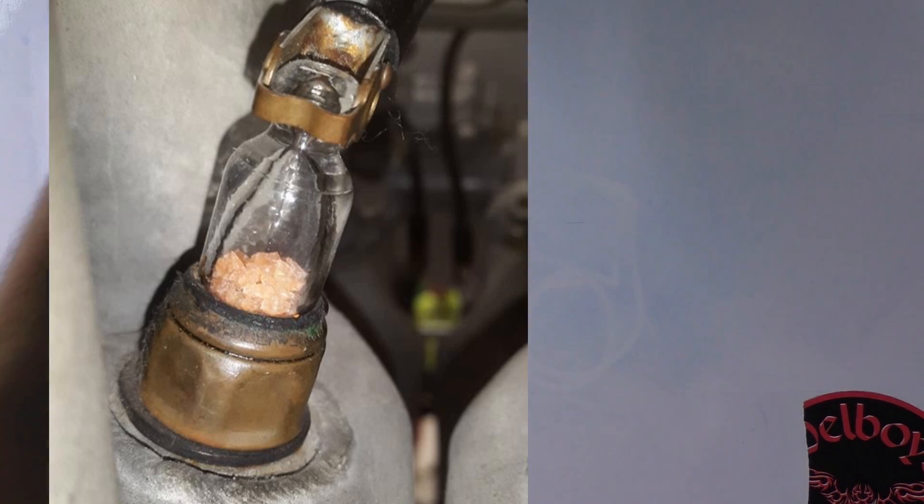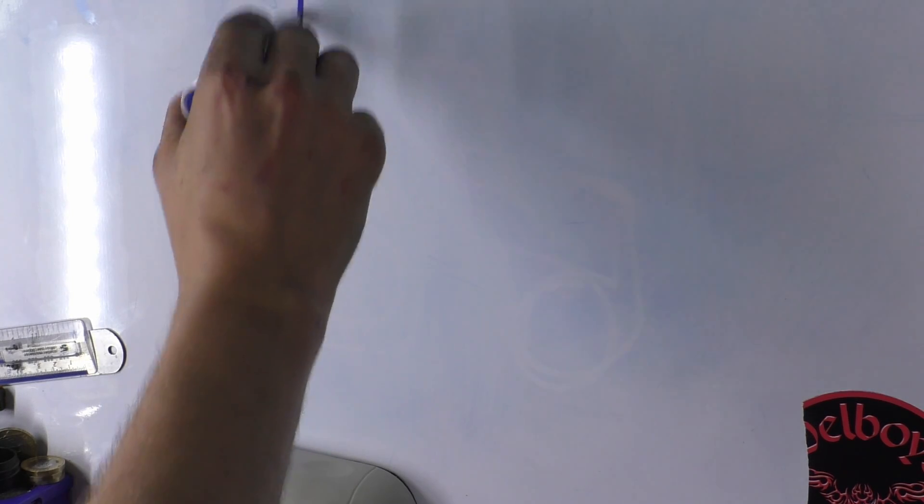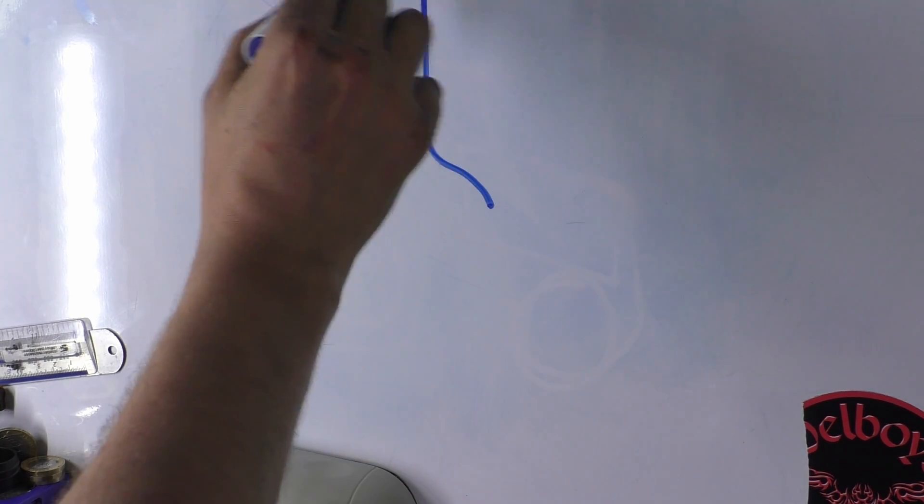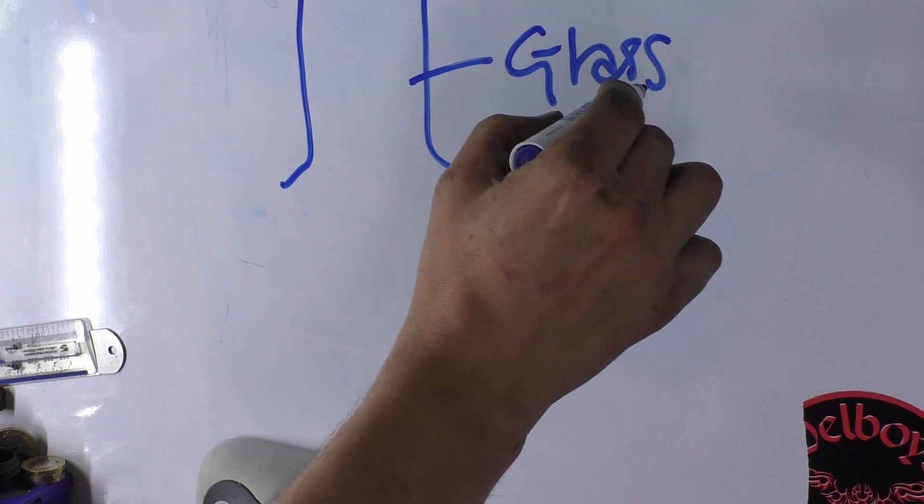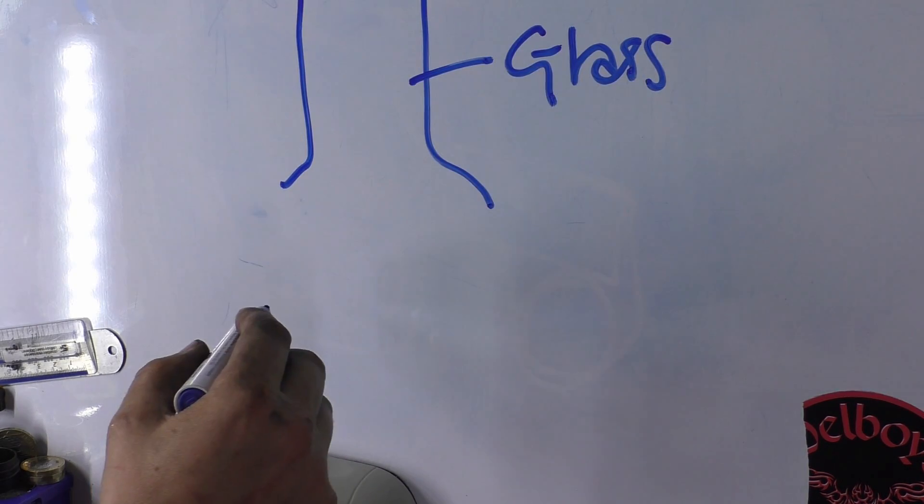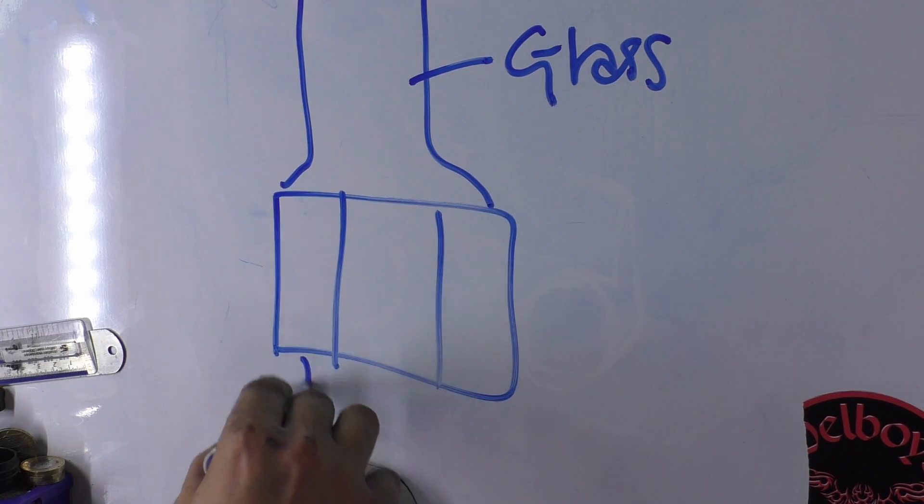So basically, where's my pen? Here it is. It looks like a spark plug body, except this part is all glass. Then it has a plug body with a hex on it, and it's just got the threads that screw into the head.